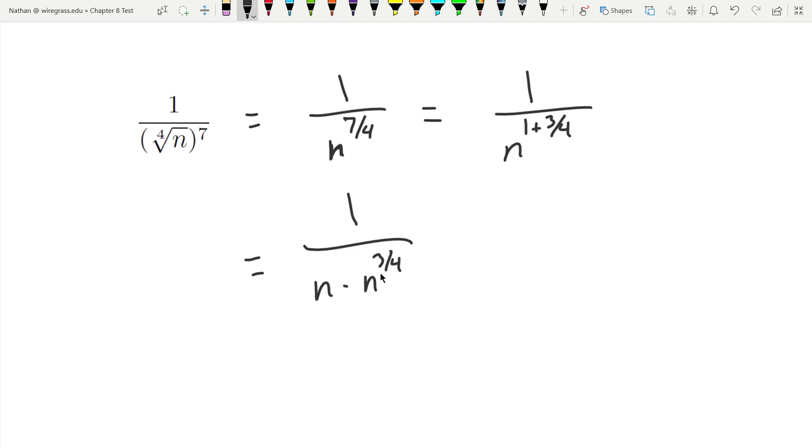You multiply like bases, you add the exponents, 1 plus 3 fourths is 7 fourths. So this is all correct. So this is now a radical. This is a 4th root of n cubed.